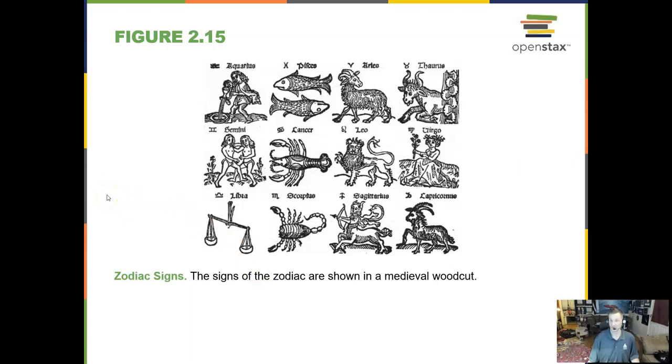These are your zodiac signs. There are really 13 constellations on the zodiac, but we recognize 12, one for each month.